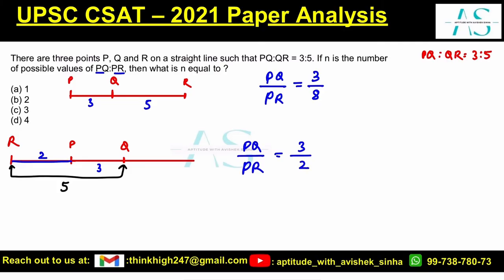And 3/2 is different from 3/8. n represents the number of possible values of PQ/PR, so we have got two possible values. Can we think of anything else? Absolutely no.